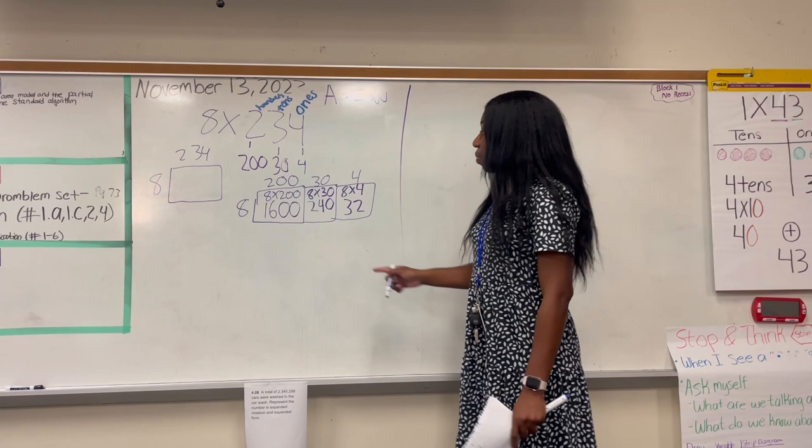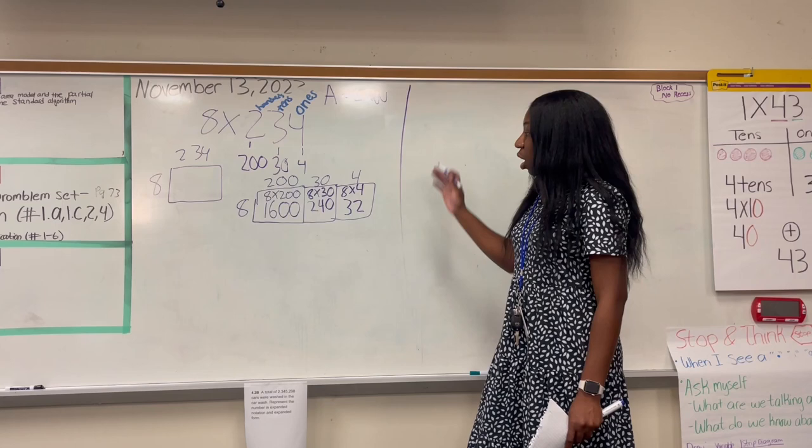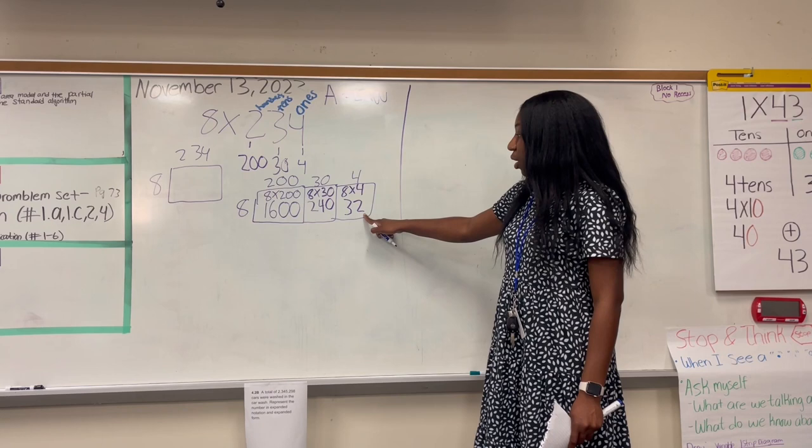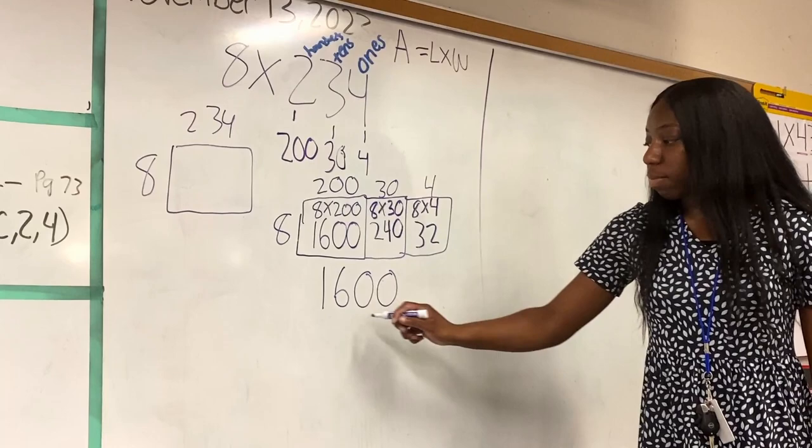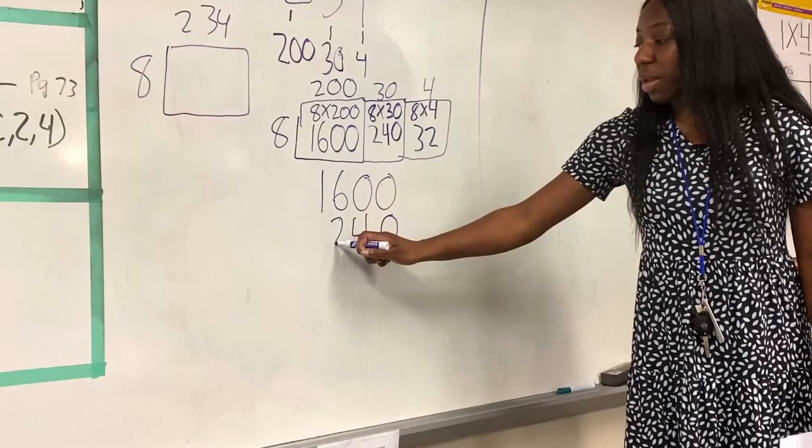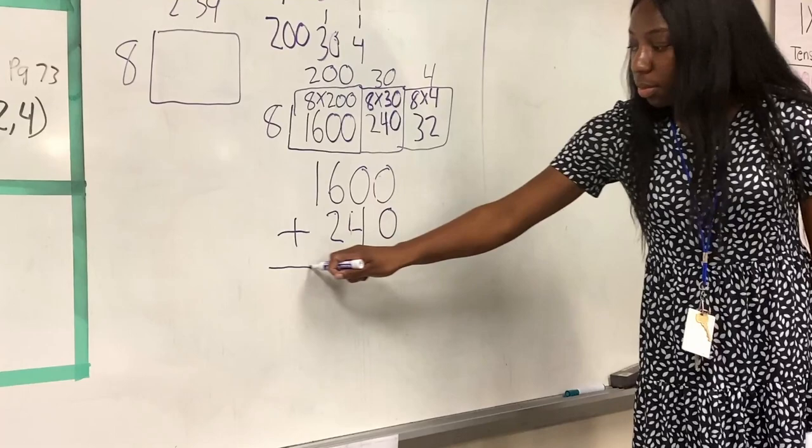So now my next step that I'm going to do, I am going to add these numbers that I came up with all together. But instead of doing it all three at one time, I'm just going to start off with the first two and then come back and add the 32 later. So I'm going to write 1,600 plus 240. And notice how my numbers are all lined up with the ones, tens, hundreds, where it's supposed to be.